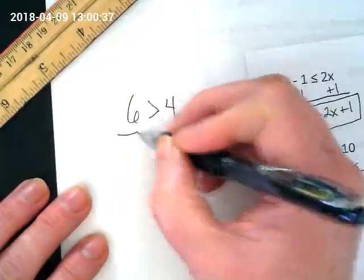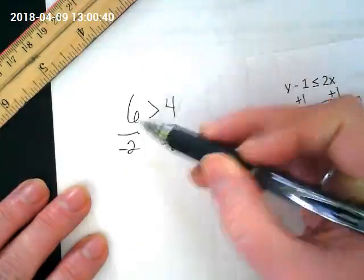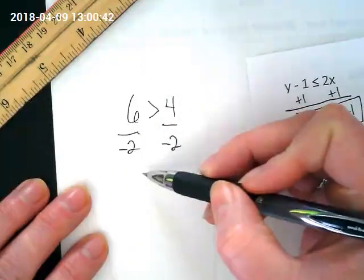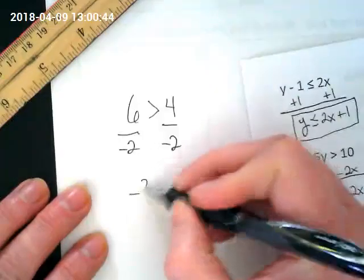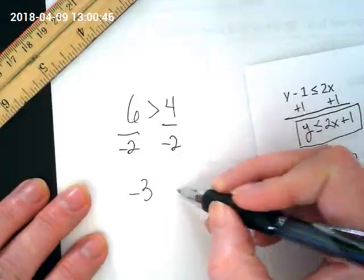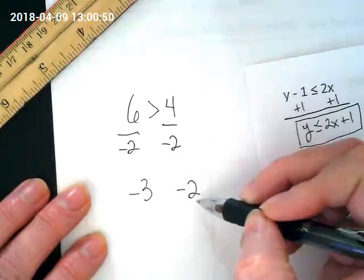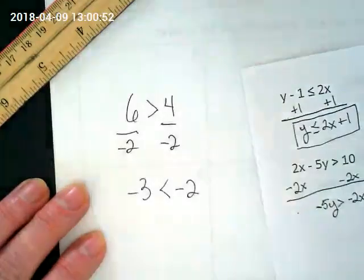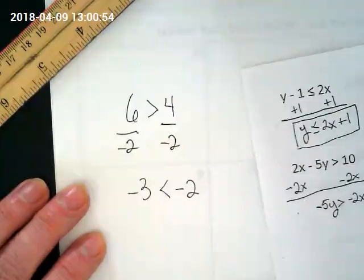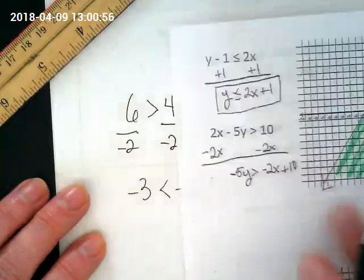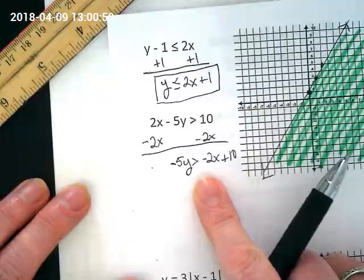If I divide them by negative 2, 6 divided by negative 2 becomes negative 3, and 4 divided by negative 2 becomes negative 2. Is this still greater than this? No. It flipped. Easy to see when we're dealing with numbers. It's harder to know when we're doing this. That's why we have that rule though.